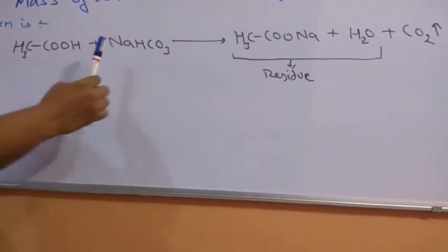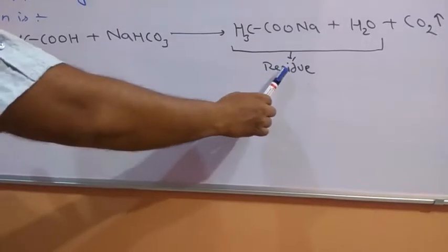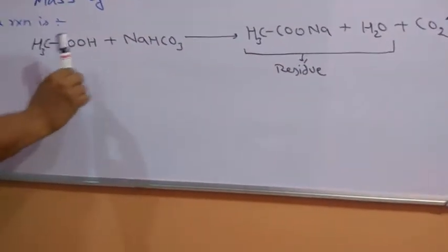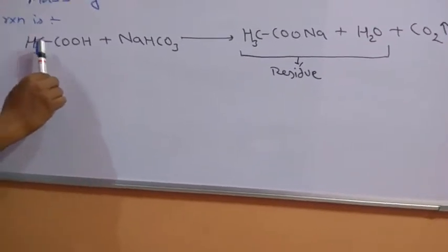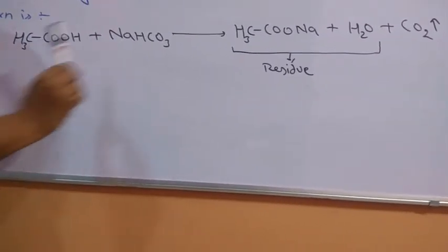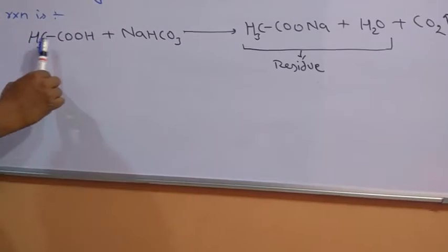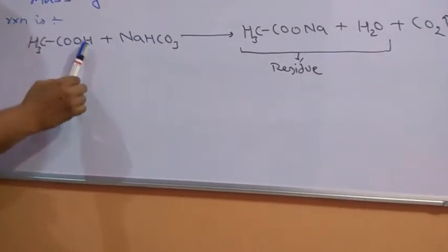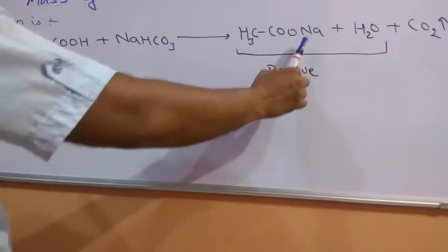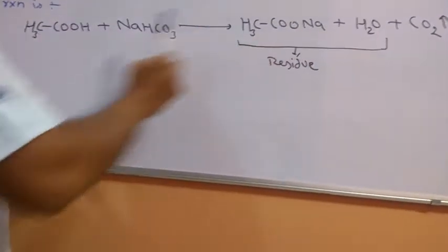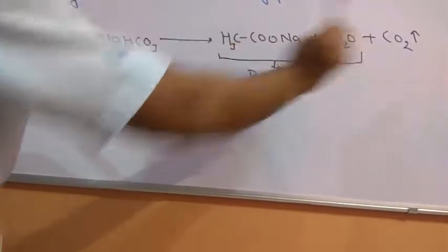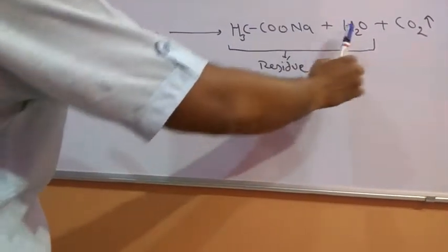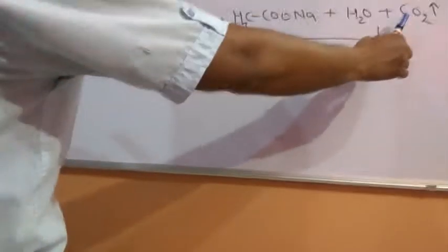When they react together, they give a residue. So you must know how to write the reaction. This is a reaction of 10th class. This is an acid, this is a base. So CH3COOH releases H, gets Na plus in place of H. So this is your salt, sodium acetate, and water and CO2 gas. So residue is sodium acetate and water, and CO2 gas.